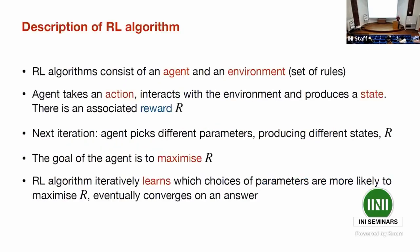An RL algorithm has an agent that interacts with an environment (a set of rules). The agent takes an action, interacts with the environment, and a corresponding state is produced. A reward function — which may depend on the state and action — is then evaluated. In the next time step, the agent picks different parameter values, makes a different action, and receives a different reward. The goal of the RL algorithm is to maximize that reward. The neural network part comes from the algorithm learning, with each iteration, which choices of actions will produce the highest long-term reward.